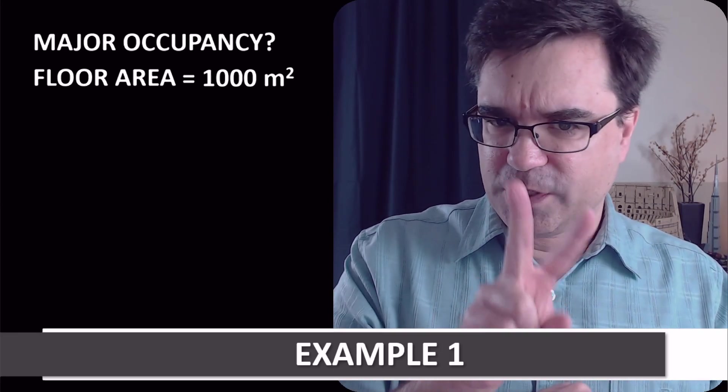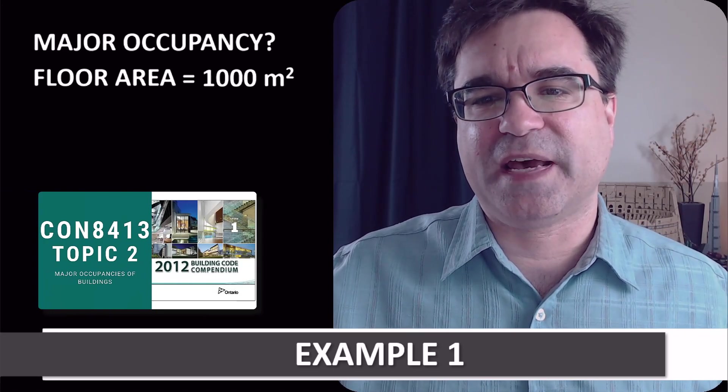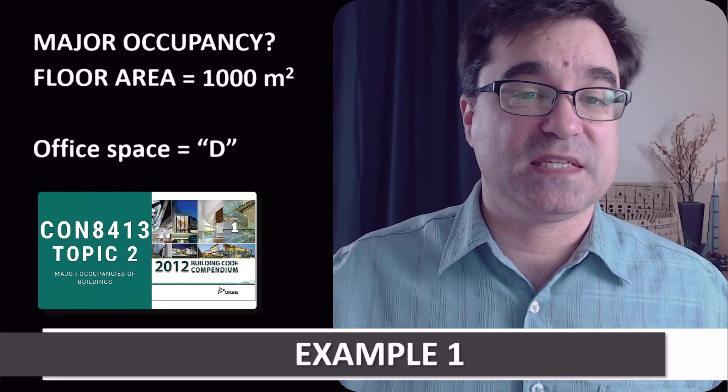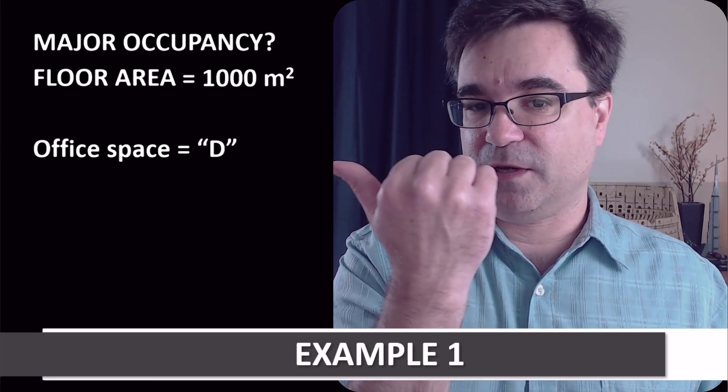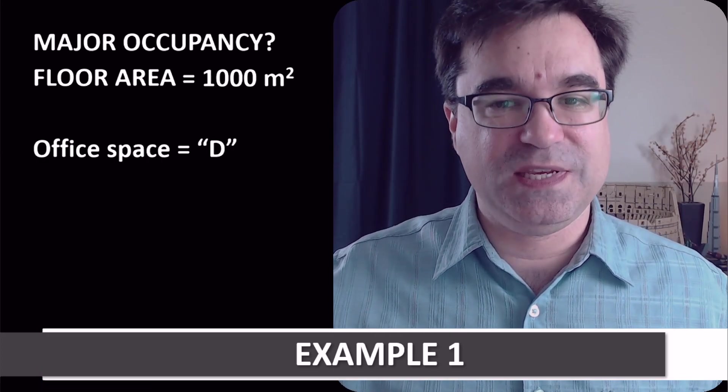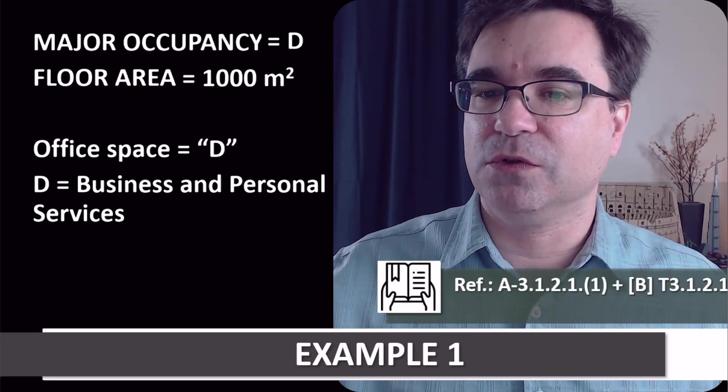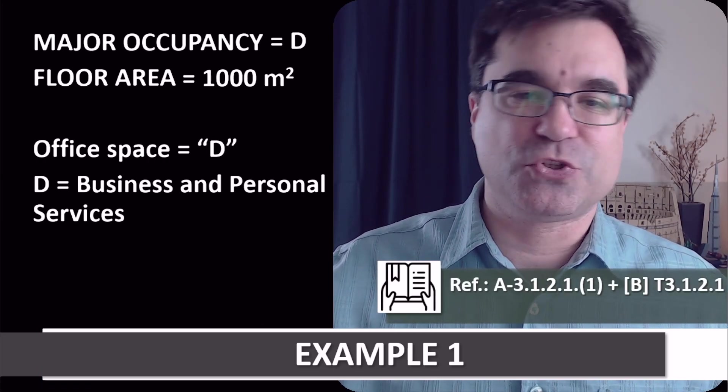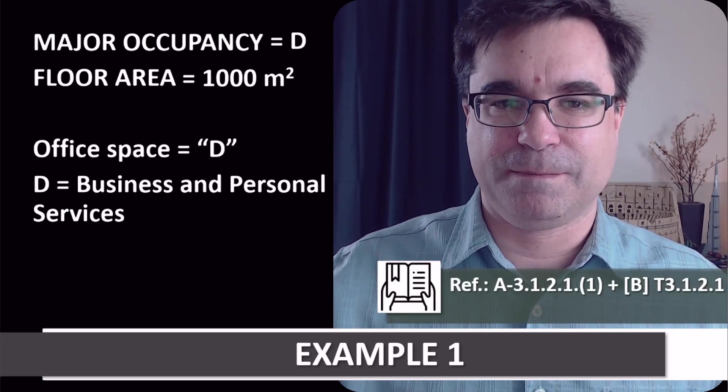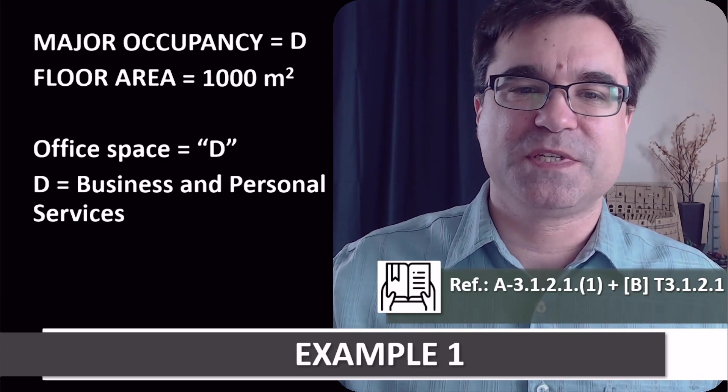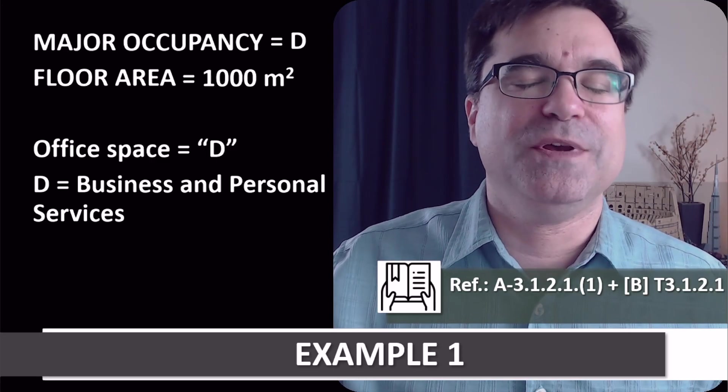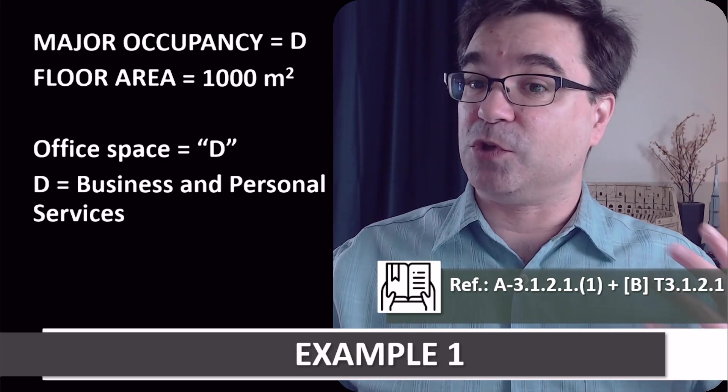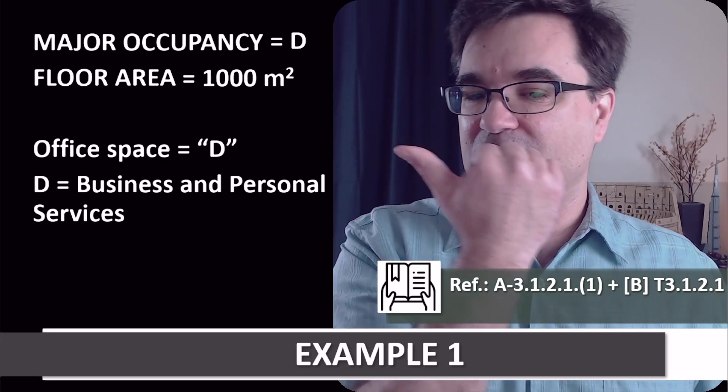Using what we learned in Topic 2, we can determine that office space is a D major occupancy, as you can see right here, where D occupancies are also called business and personal services occupancies. And if it helps, here right below, you can see some of the relevant building code references that I used from Topic 2 to arrive at this result.